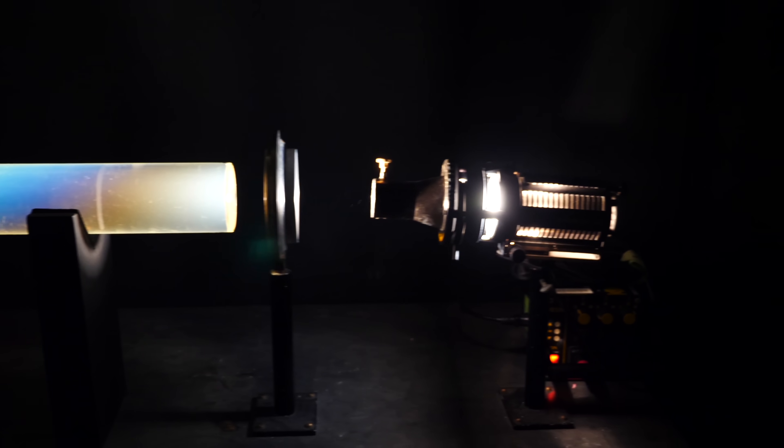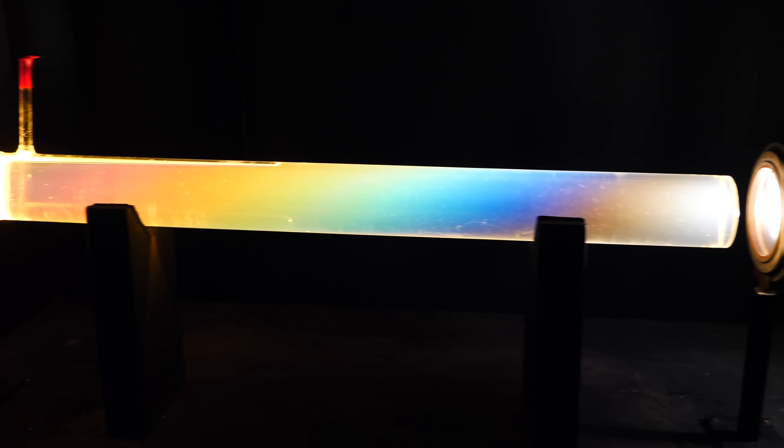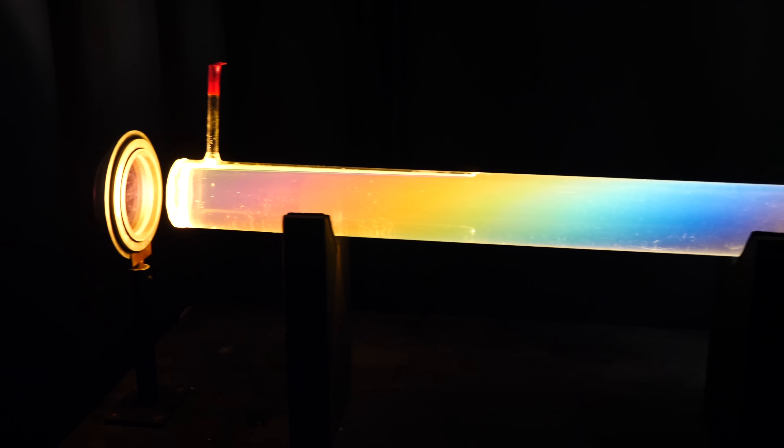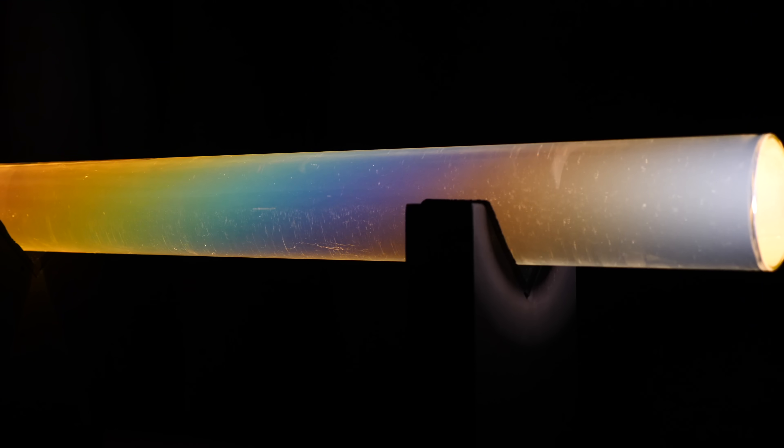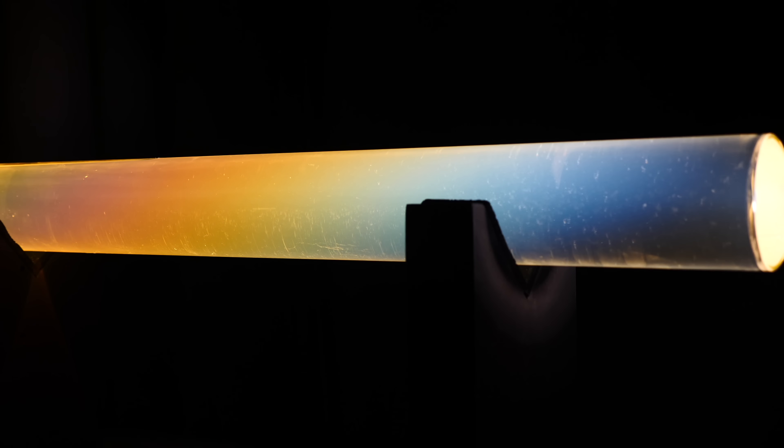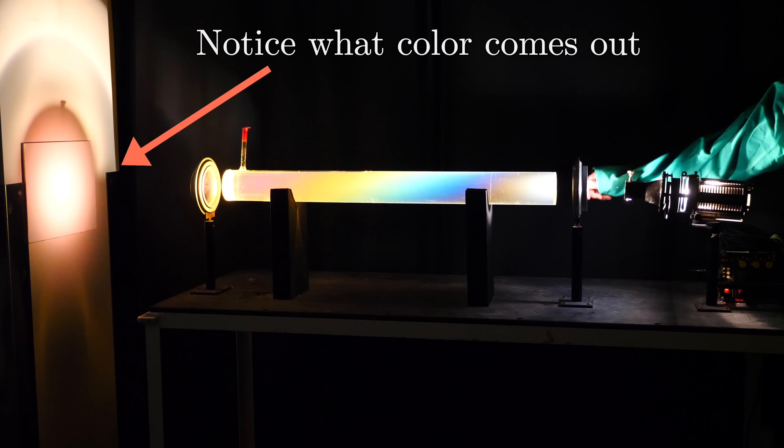Something about the interaction with sugar water separates the light out into these different bands of color, but it does so in this really intriguing way where the colors appear to form these spiral helixes down the tube.